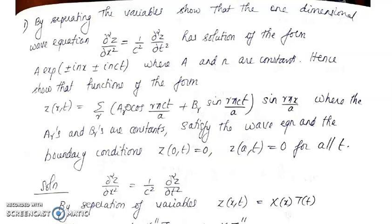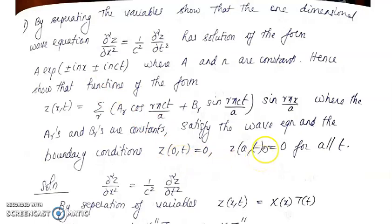The given equation is the one-dimensional wave equation. We need to show it has a solution of the form A·e^(±inx ± inct) — that is the first part. In the second part, we need to show that when we apply the boundary conditions z(0,t) = 0 and z(a,t) = 0, we get a solution involving summation of cosine and sine terms.